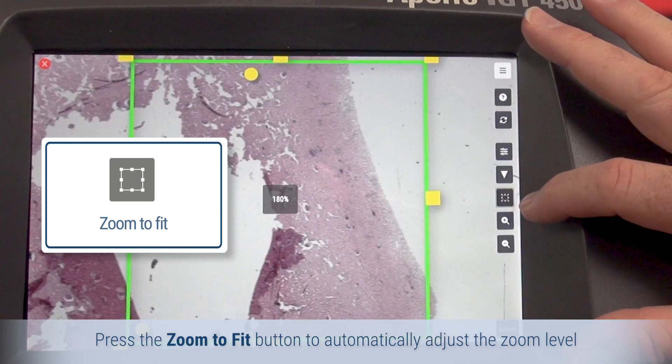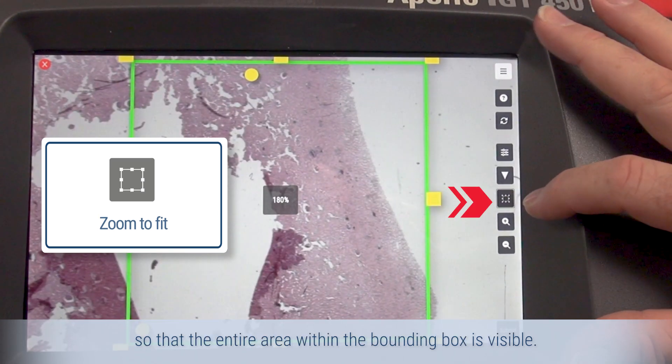Press the zoom to fit button to automatically adjust the zoom level so that the entire area within the bounding box is visible.